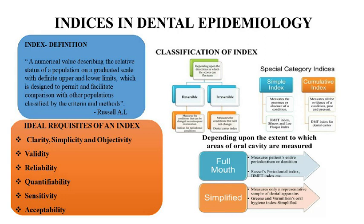Indices may also be classified under certain general categories according to the entity which they measure: disease index, symptom index, and treatment index. The decayed portion of the DMFT index best exemplifies a disease index. Indices measuring gingival or circular bleeding are essentially symptom indices. The filled portion of the DMFT best exemplifies a treatment index.